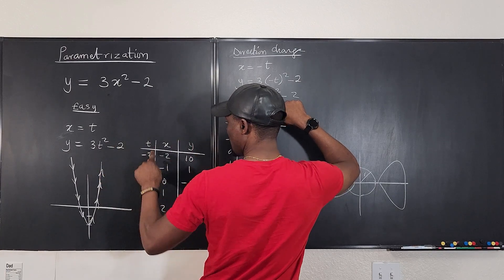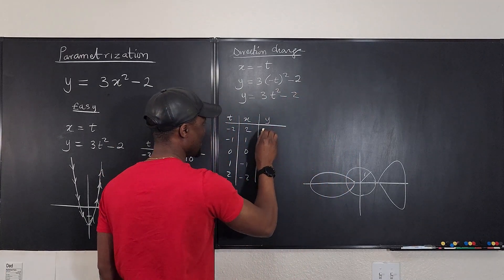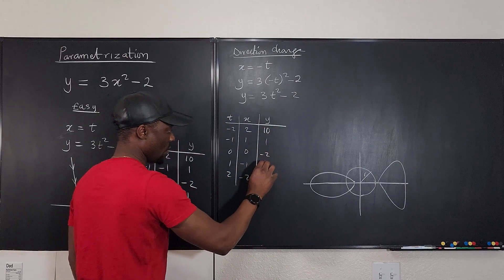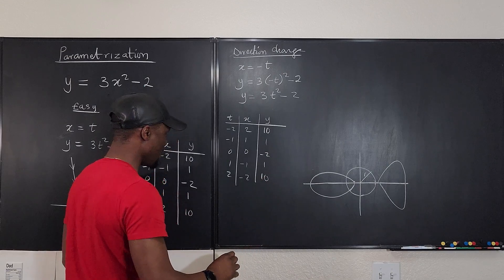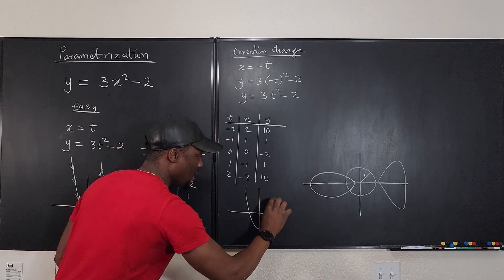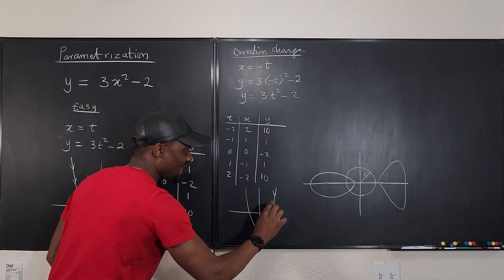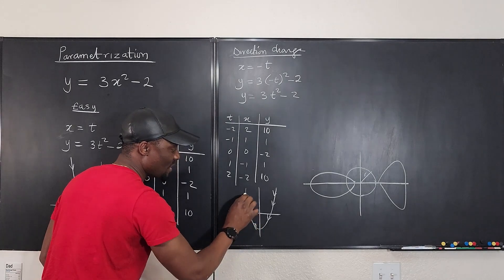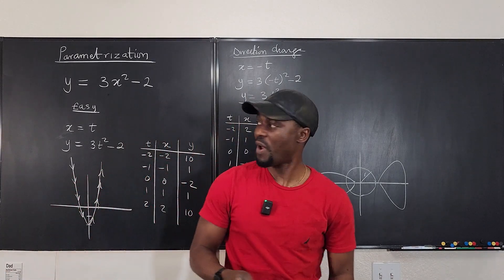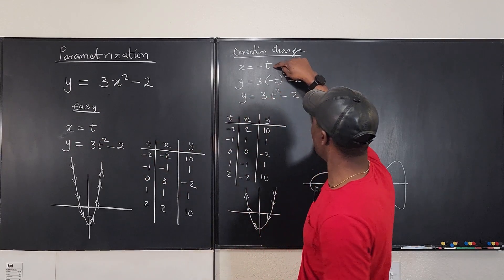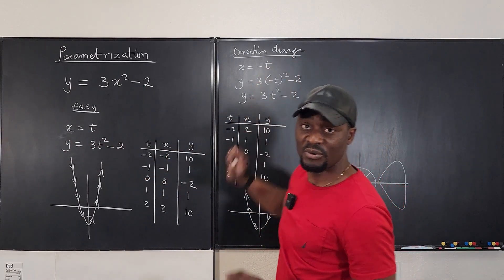So if you plug in t, the same thing is what you're going to get. You're going to get 10, 1, you're going to get negative 2, 1, and 10. So when you sketch the graph this time, your graph is going to go in the opposite direction. That's the only thing that has changed. The values still stay the same. But now you're going in the opposite direction just because dx dt for this one is negative.